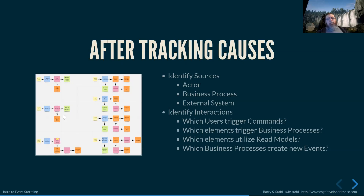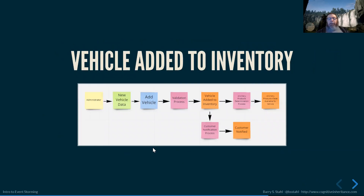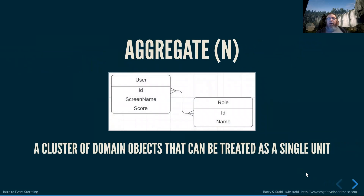Now we're really starting to get a picture of our flows — how the domain works together. Here's a close-in view of one example: an administrator may have new vehicle data and add that vehicle. There may be a validation process, which then triggers — if valid — a 'vehicle added to inventory' event. That may notify certain customers who have subscribed to be told when new vehicles of a certain type are added. So that business process can then notify customers and issue 'customer notified' events.